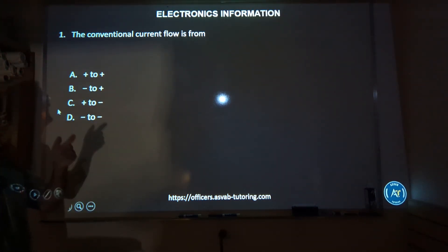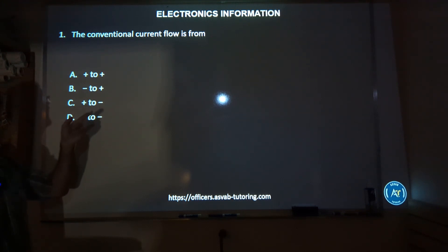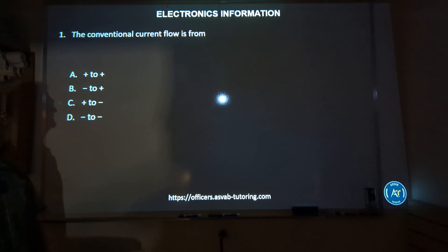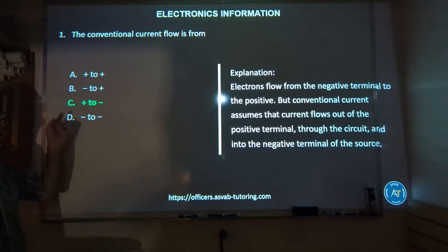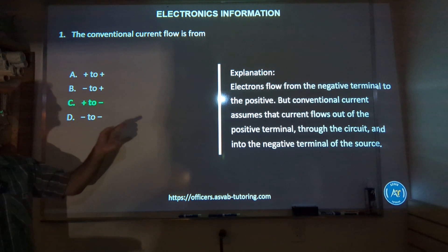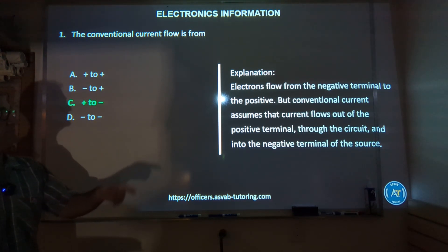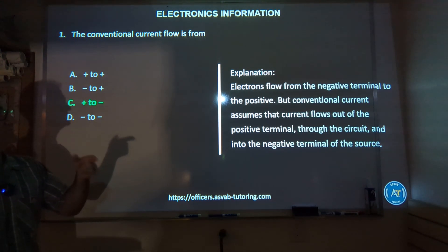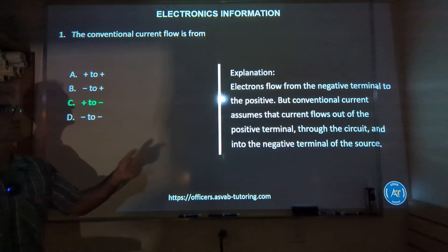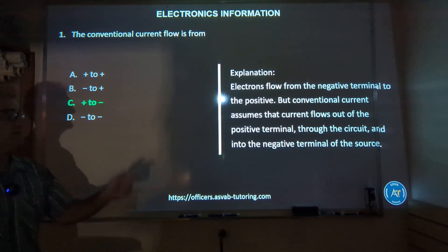Number one: current flows from — positive to positive, negative to positive, positive to negative, or negative to negative? The correct answer is C, positive to negative. Electrons flow from the negative terminal to the positive terminal, but conventional current assumes that the current flows out of the positive through a circuit and into the negative terminal.